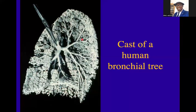This is a cast of a human bronchial tree, where you have the main bronchus, and you have lobar bronchi and segmental bronchi leading to terminal bronchioles, which also lead to respiratory bronchioles. Then you have alveolar ducts, alveolar sacs, and alveoli.